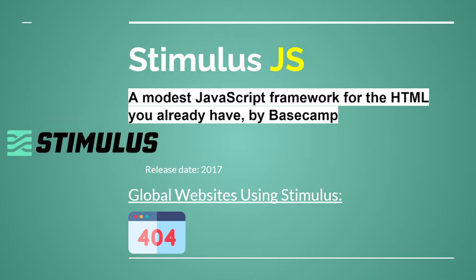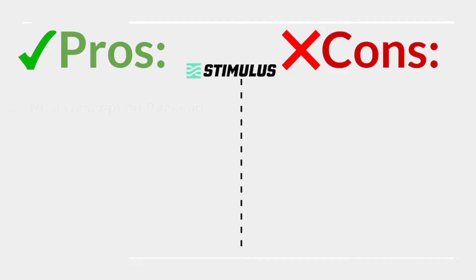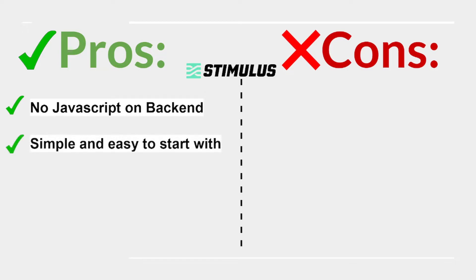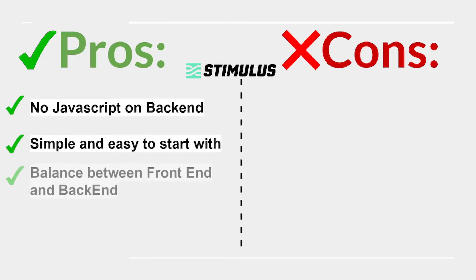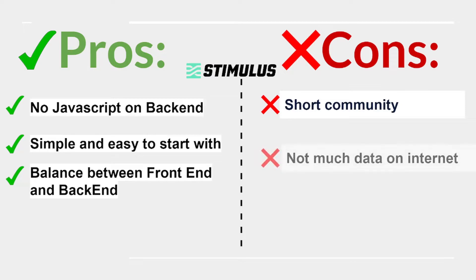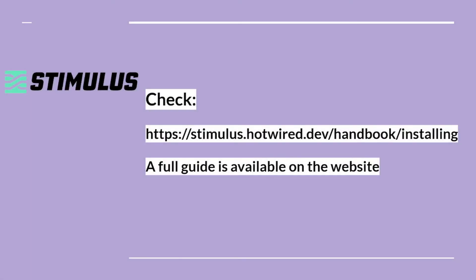Stimulus.js is a modest JavaScript framework for the HTML you already have, by Basecamp, released in 2017. No major popular websites are known to be built with Stimulus. Pros: no JavaScript on the backend needed, simple and easy to start with, good balance between frontend and backend. Cons: small community, not much data available on the internet. Check the Stimulus website for a full guide.